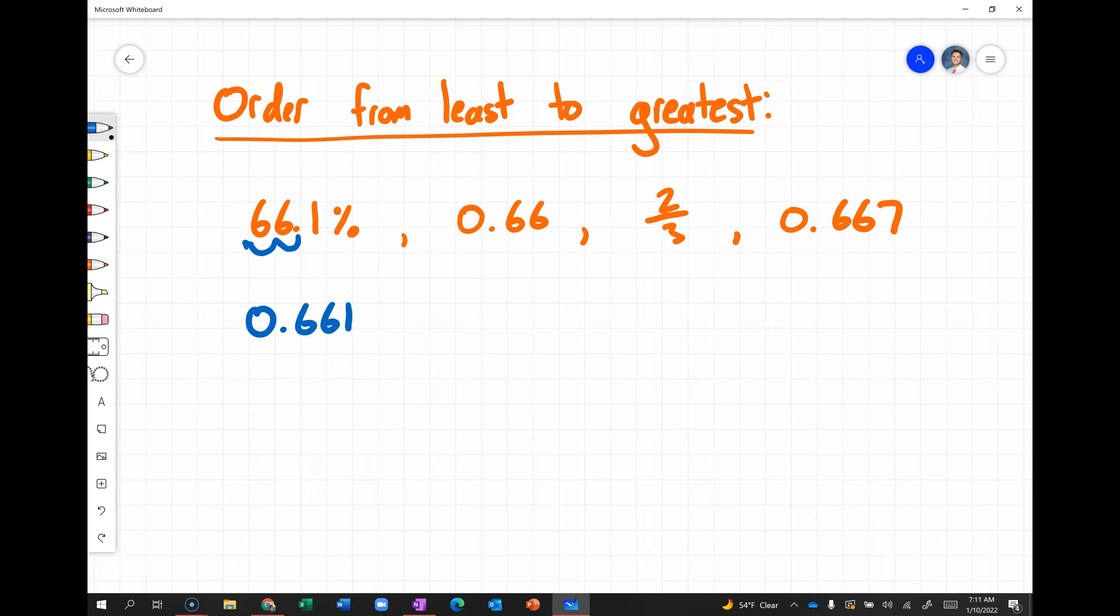Then, two-thirds, we need to divide 2 by 3. And, you will see we're going to get 0.6 repeating. So, just to put that into context, comparing to these other numbers, that would be 0.6666 and so on. Here, we have 0.660 and, of course, 0.667.